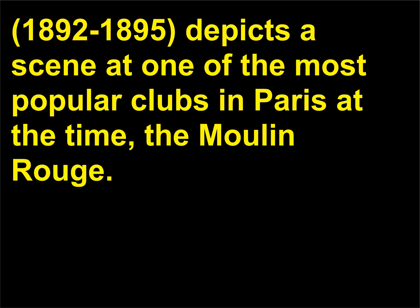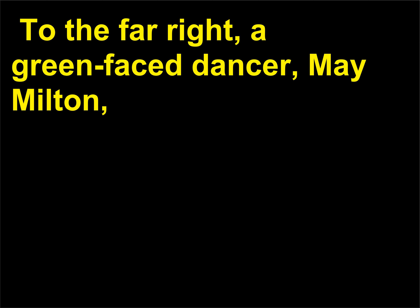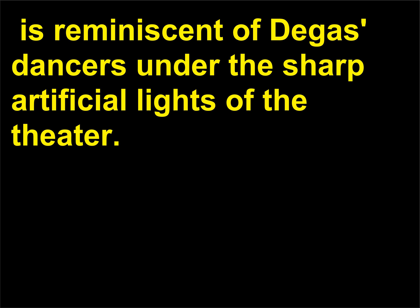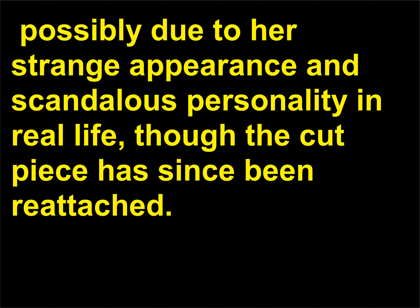His painting At the Moulin Rouge (1892–1895) depicts a scene at one of the most popular clubs in Paris at the time. To the far right, a green-faced dancer, May Milton, is reminiscent of Degas's dancers under the sharp artificial lights of the theater. At some point in history, someone cut her out of the picture, possibly due to her strange appearance and scandalous personality in real life, though the cut piece has since been reattached.